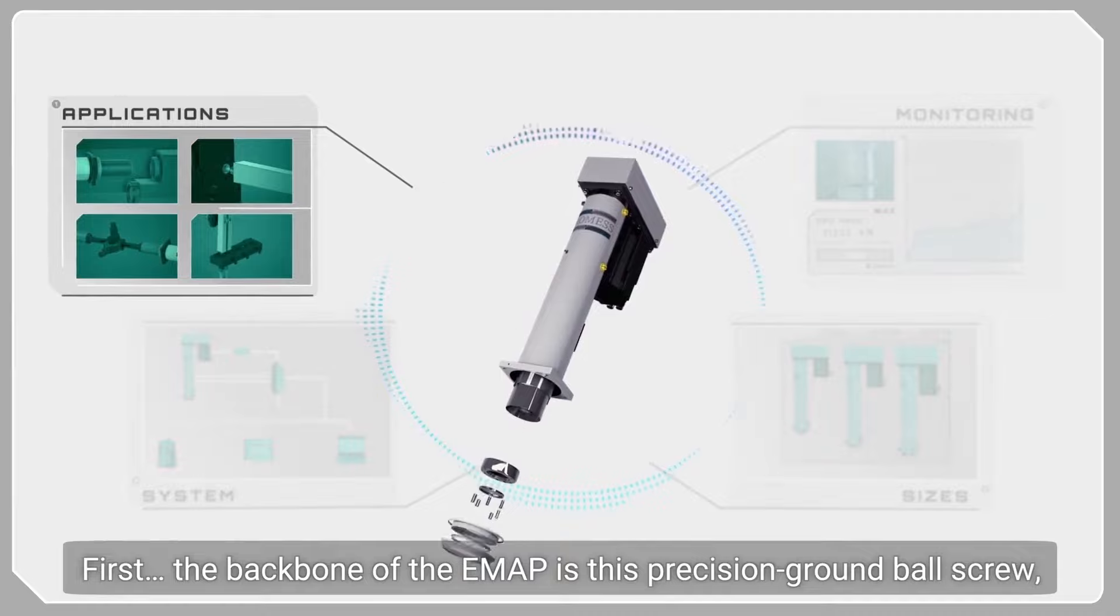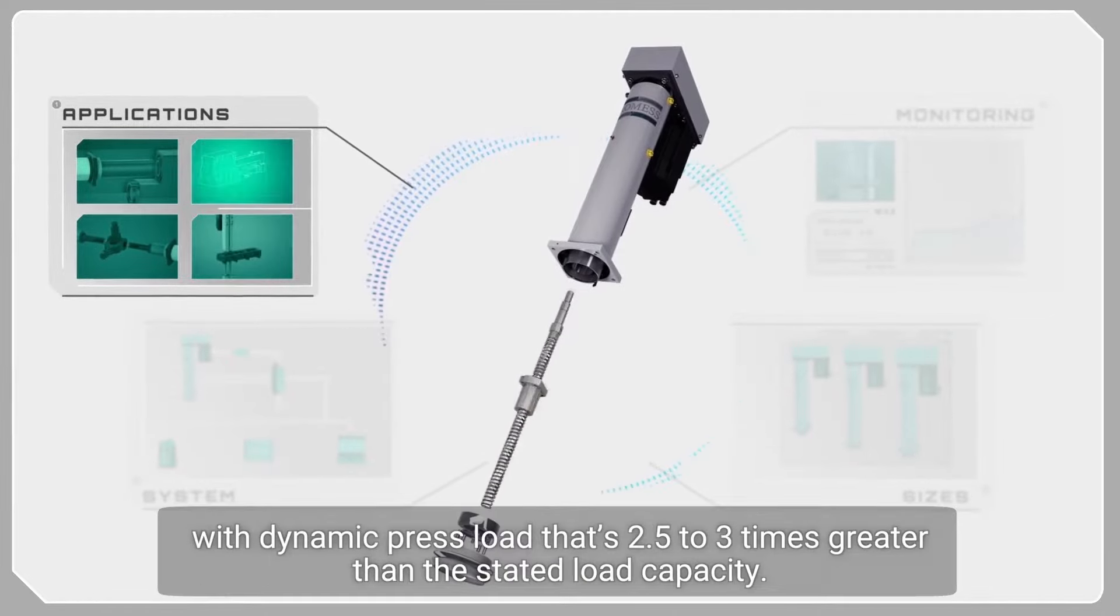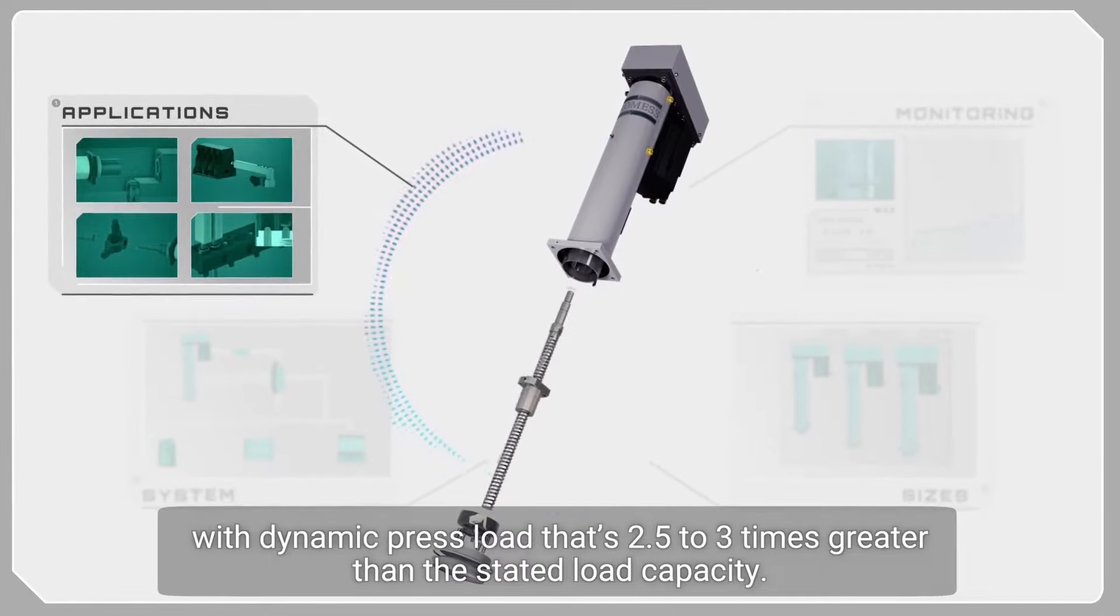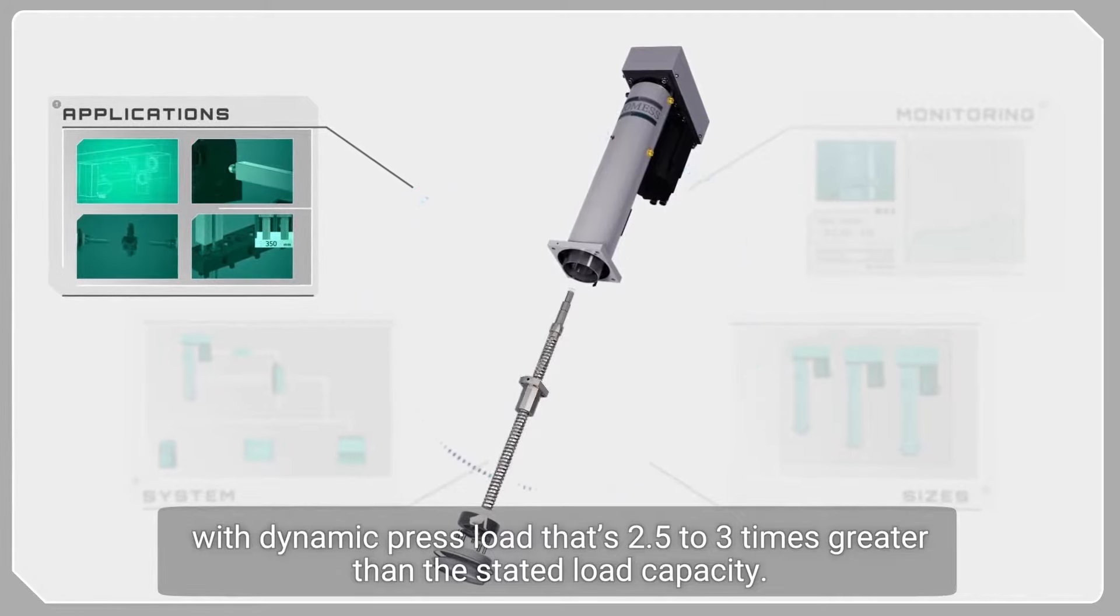First, the backbone of the EMAP is this precision ground ball screw with dynamic press loads that are two-and-a-half to three times greater than the stated load capacity.